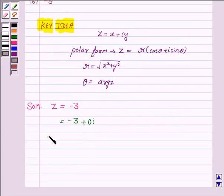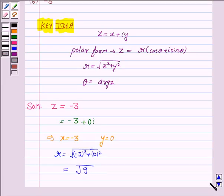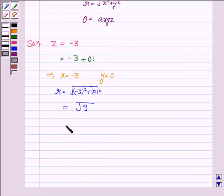This implies x = -3, that is, the real part is -3 and the imaginary part is 0. So r = √((-3)² + 0²), which equals √9 = 3.